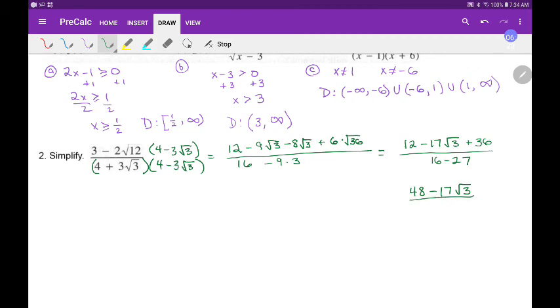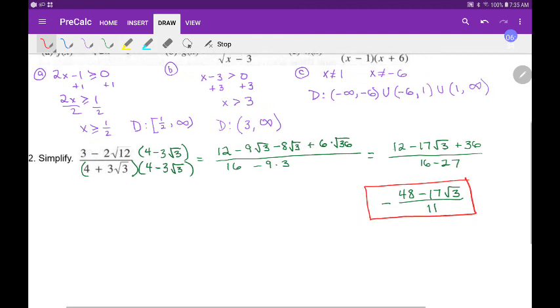So let's see, our final product here is going to be 48 minus 17 square root of 3 over, we got a negative, maybe we'll put the negative out in front, and we have 11 on the bottom. Okay, I don't think I can simplify that anymore.